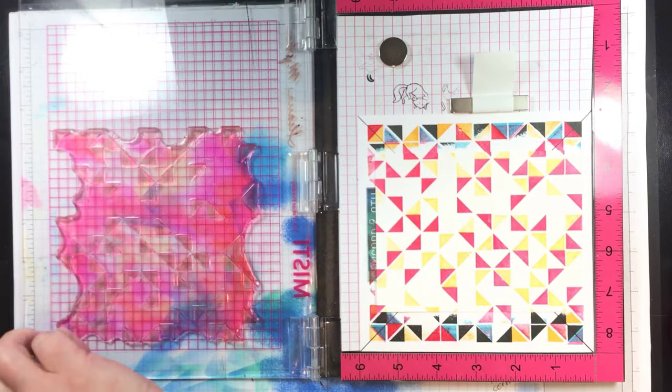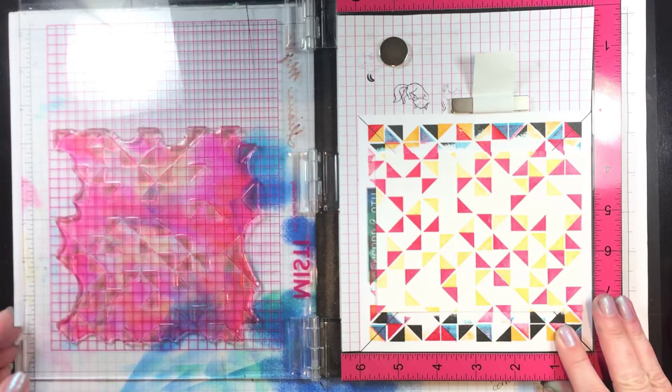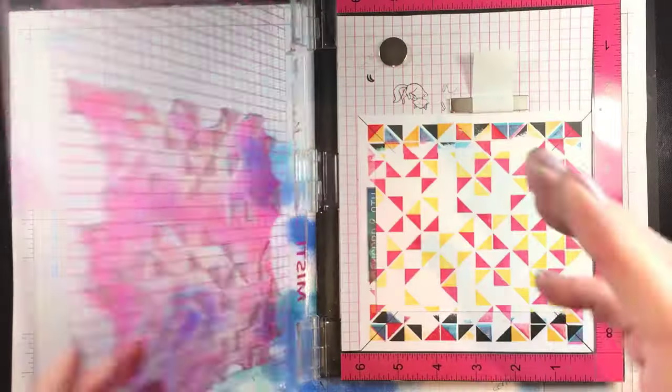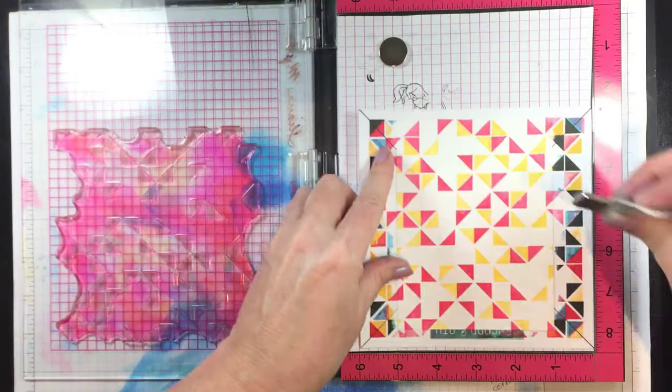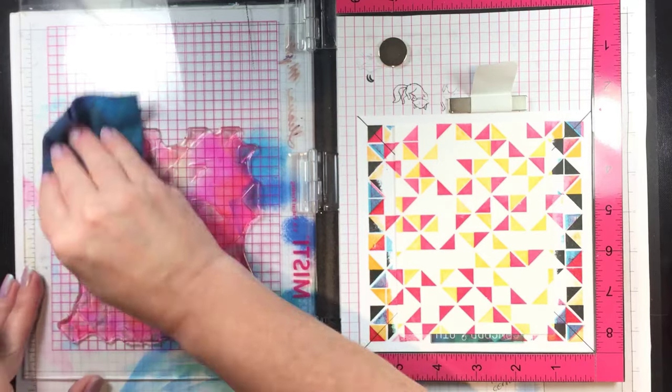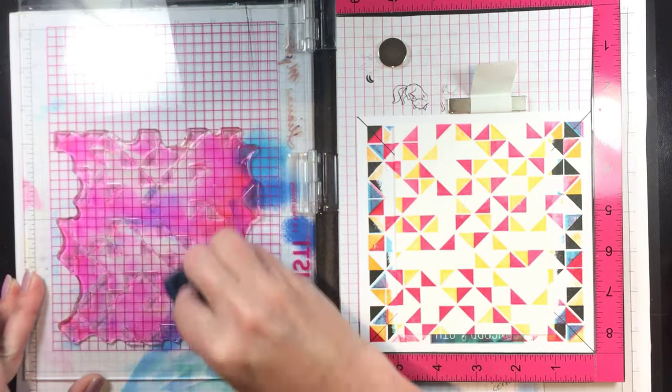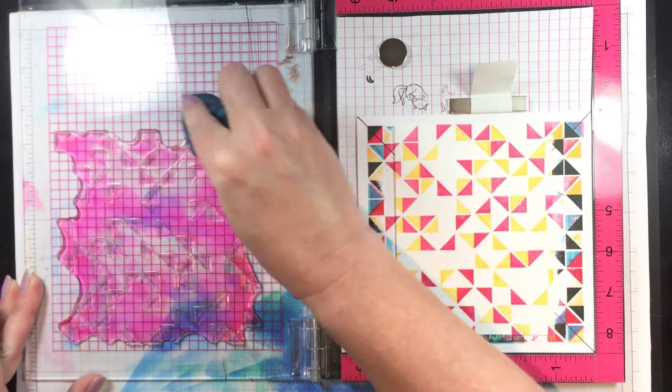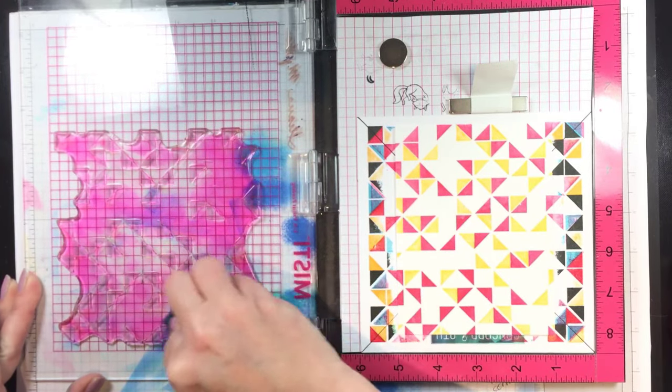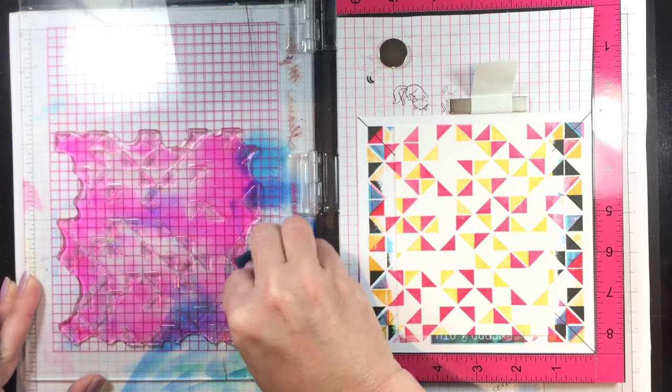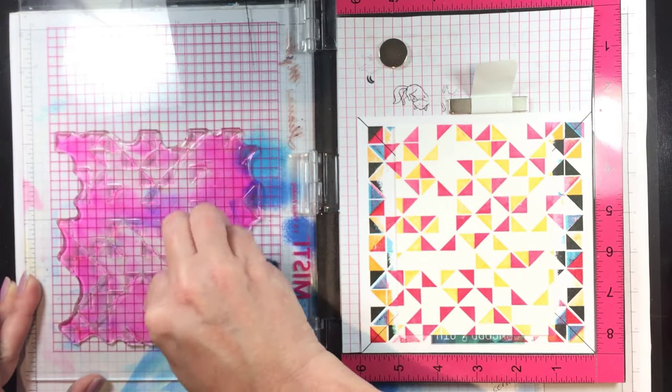So now I can talk about how this was designed and why you need the six by six square behind your cardstock. If you think about the way the MISTI is designed with the corner and you look at that stamp, that stamp is not perfectly square and even if it was photopolymer has a little lip around the images so it wouldn't be possible to line it exactly up in a corner and have it rotate perfectly around the center.